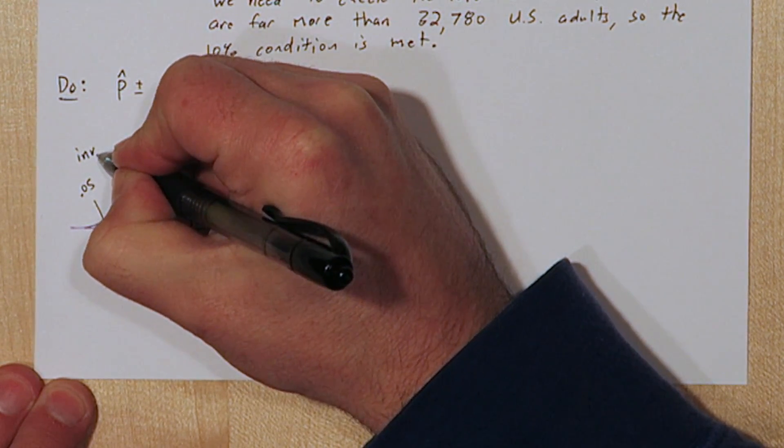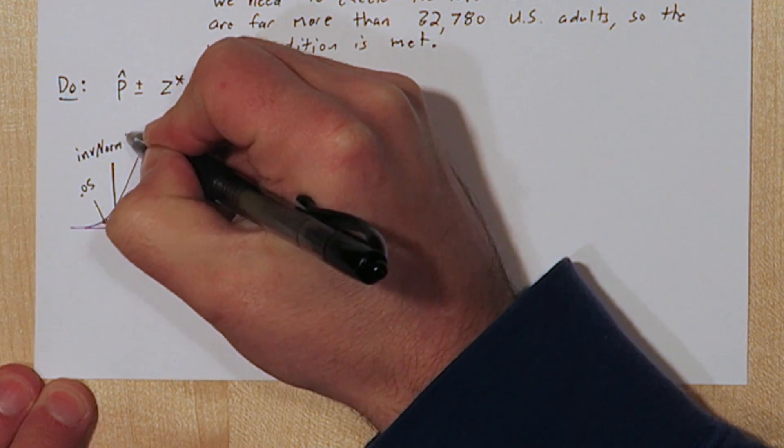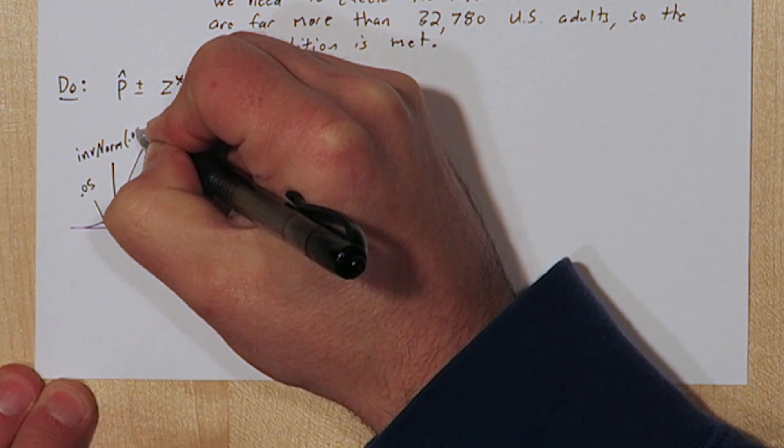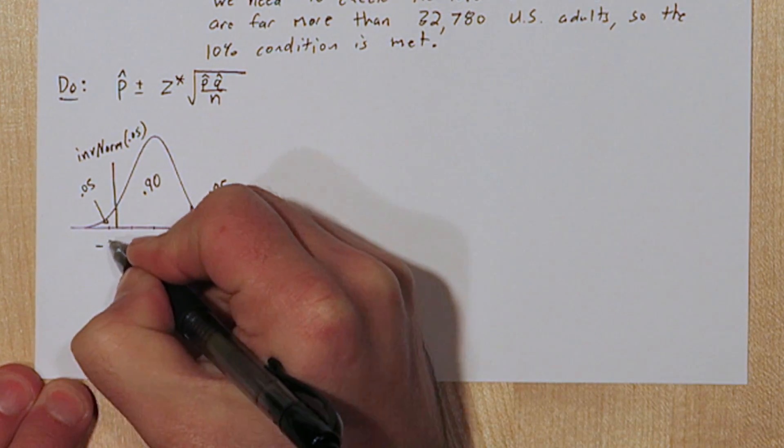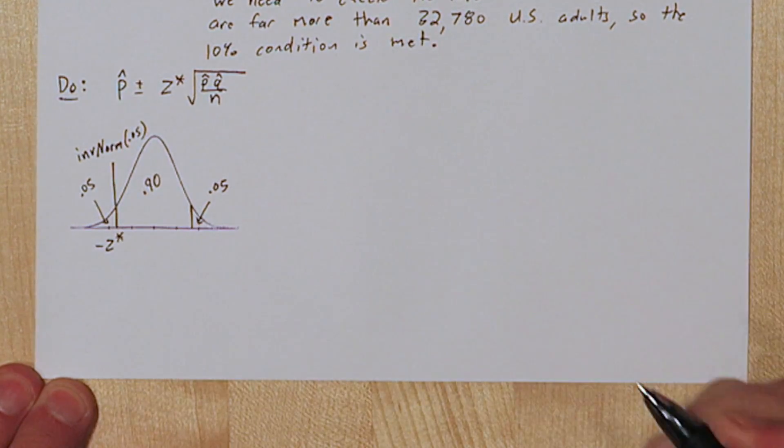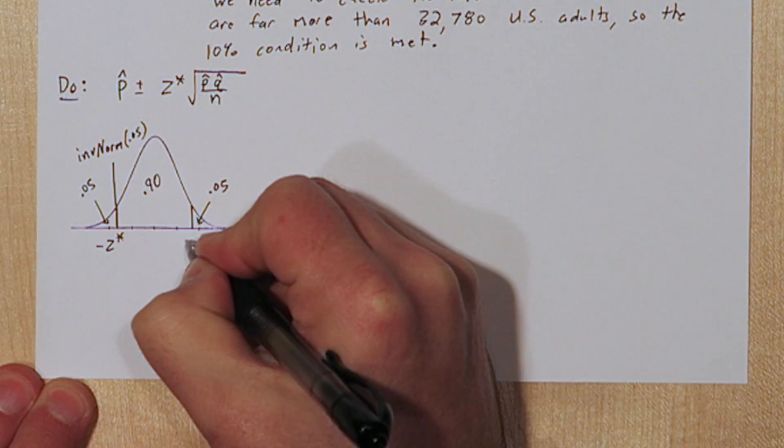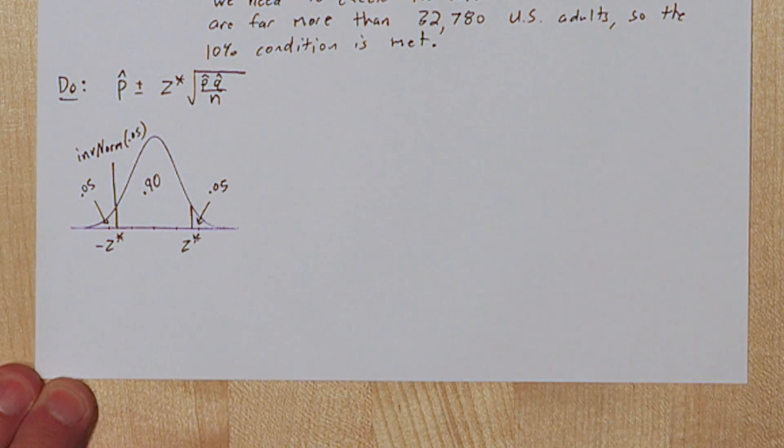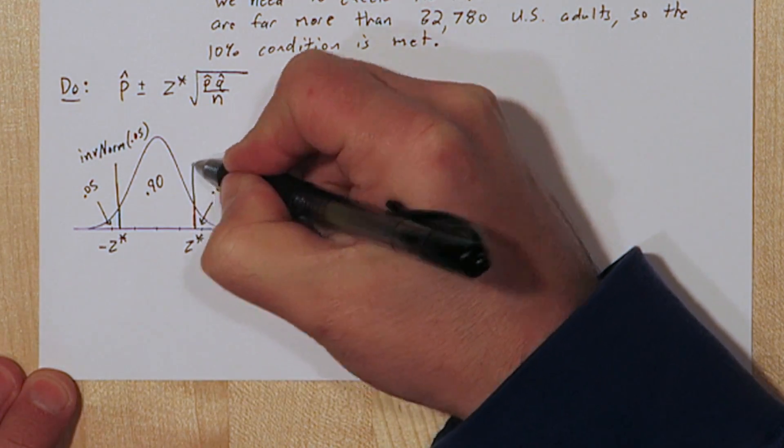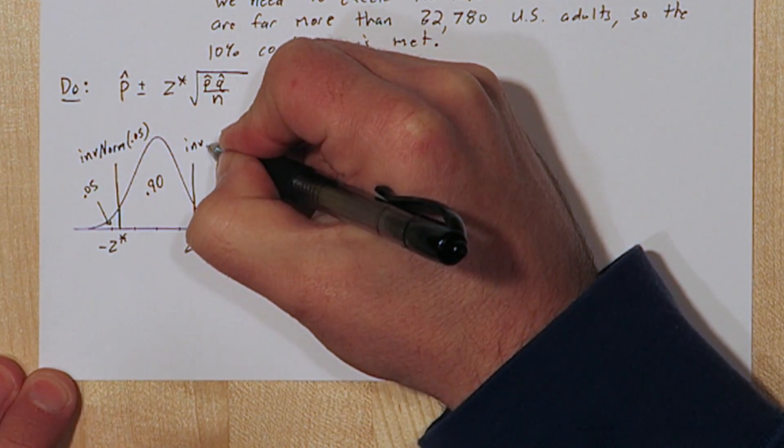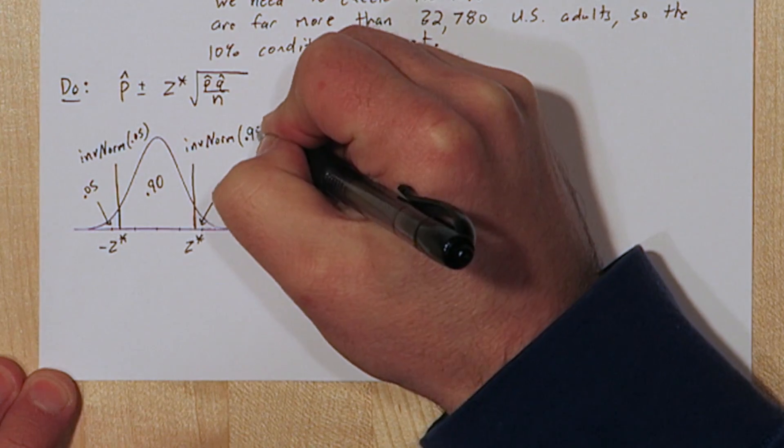If we want to figure out the negative Z-score over here, we could do inverse norm .05. That will tell us what cuts off the lower 5% of the normal distribution. To figure out the positive critical value we'd have to use inverse norm .95. That's because 95% of the area of the normal distribution is to the left of this value.